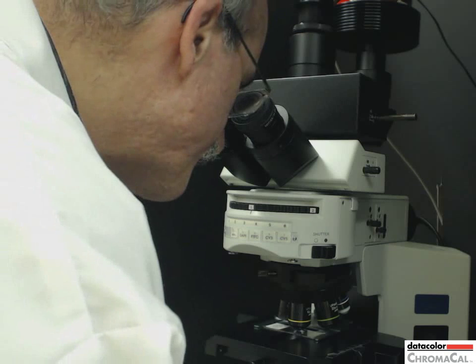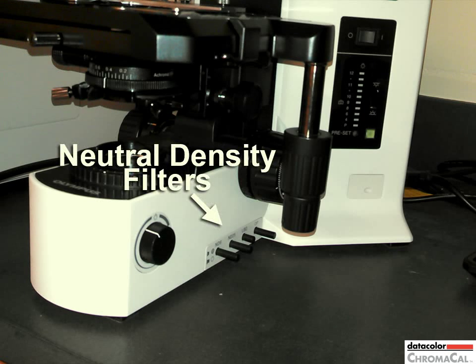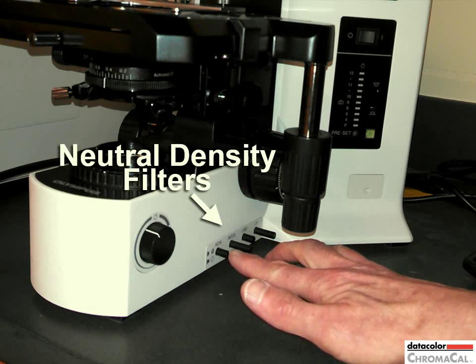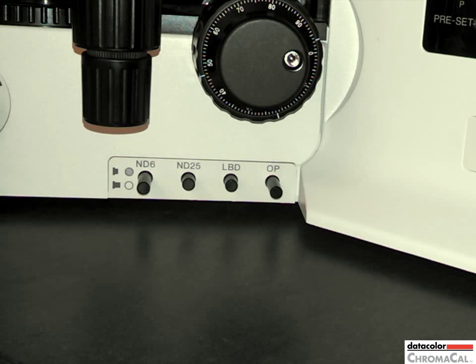If the lamp is too bright or too dark, move neutral density filters in or out of the light path. Here this is done by pressing a bar.